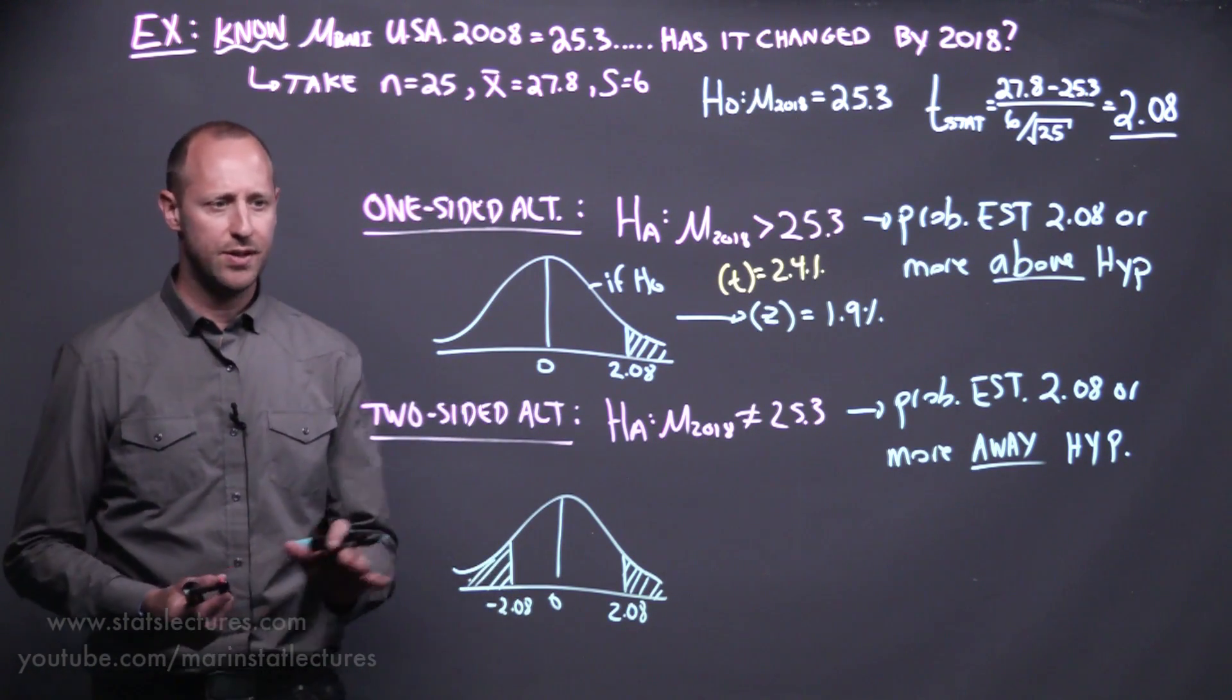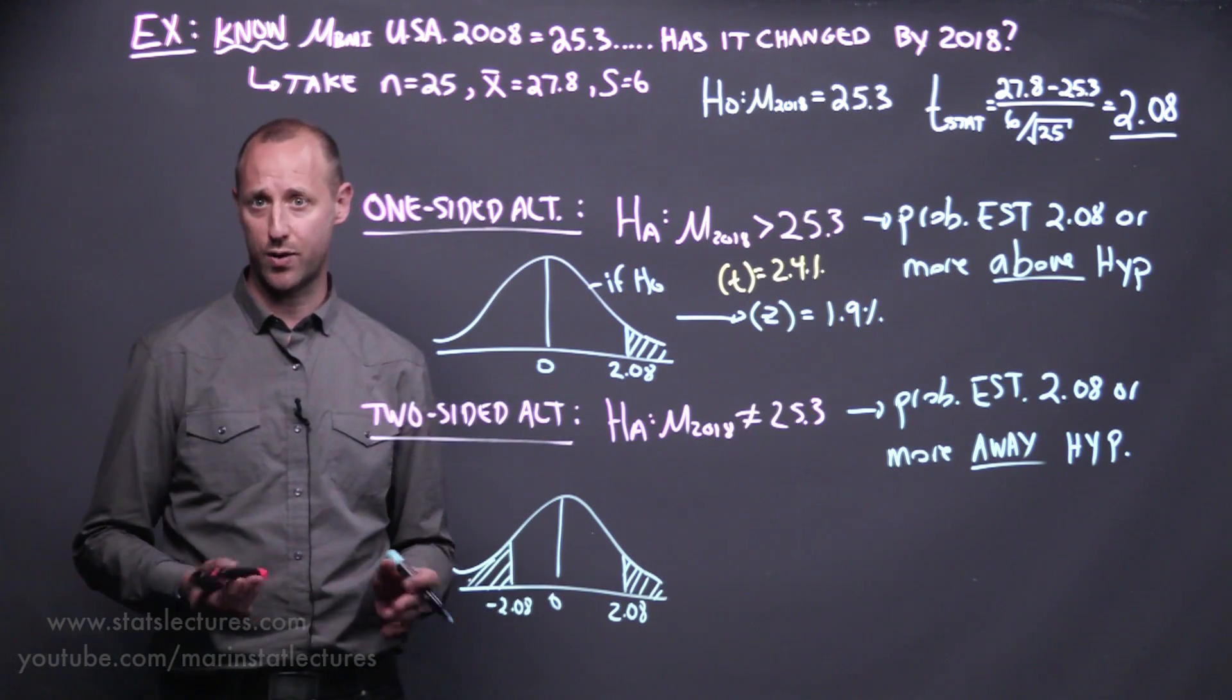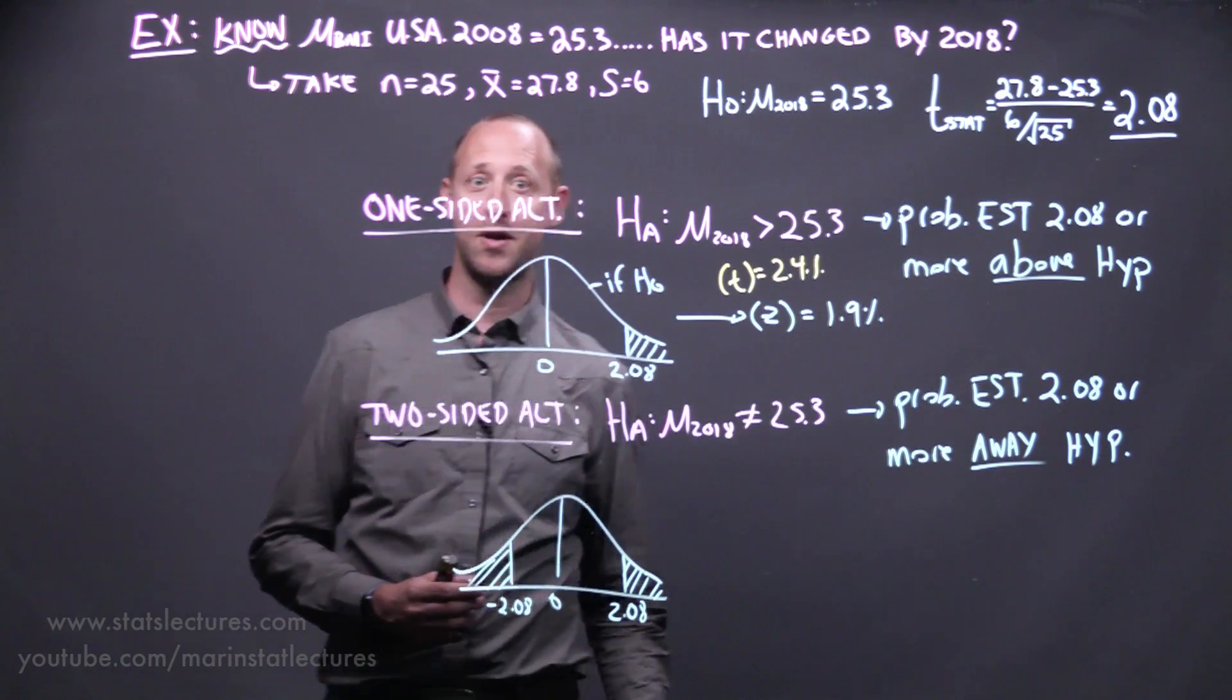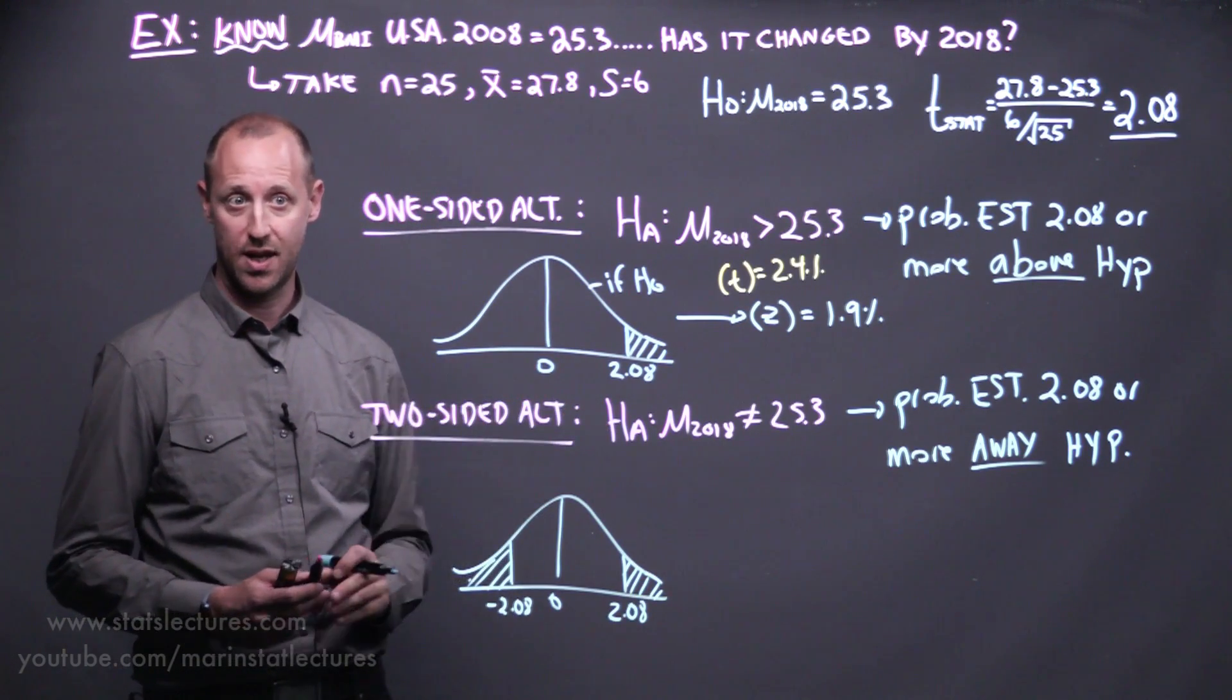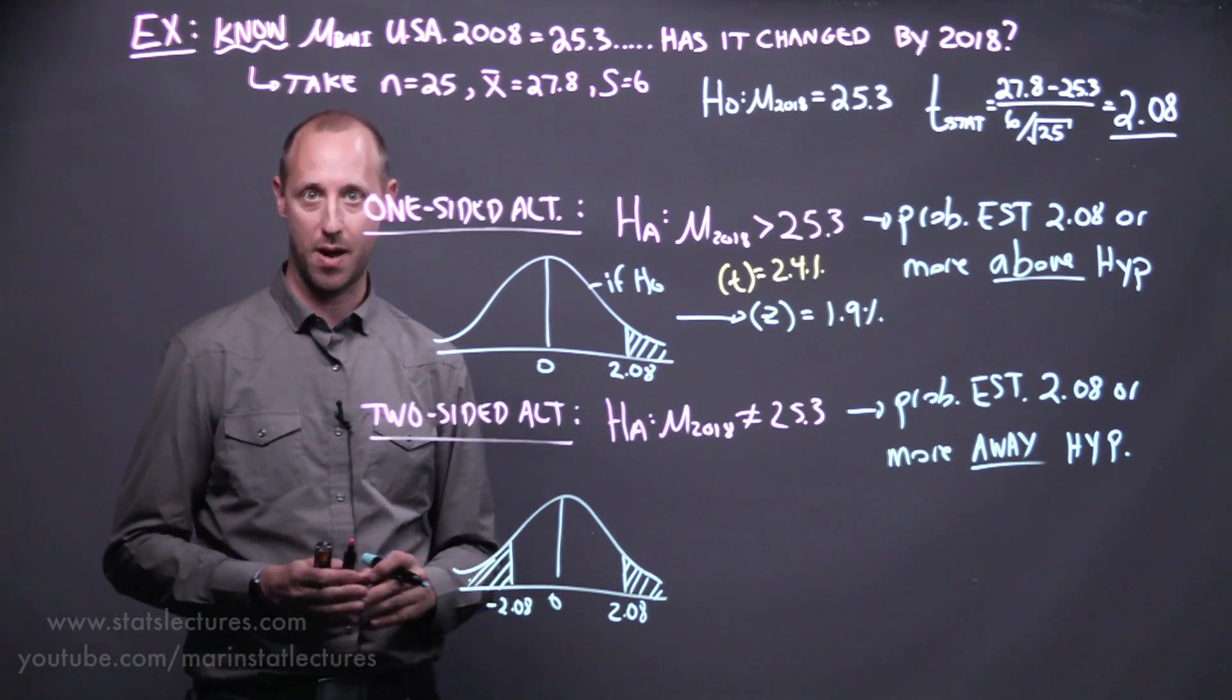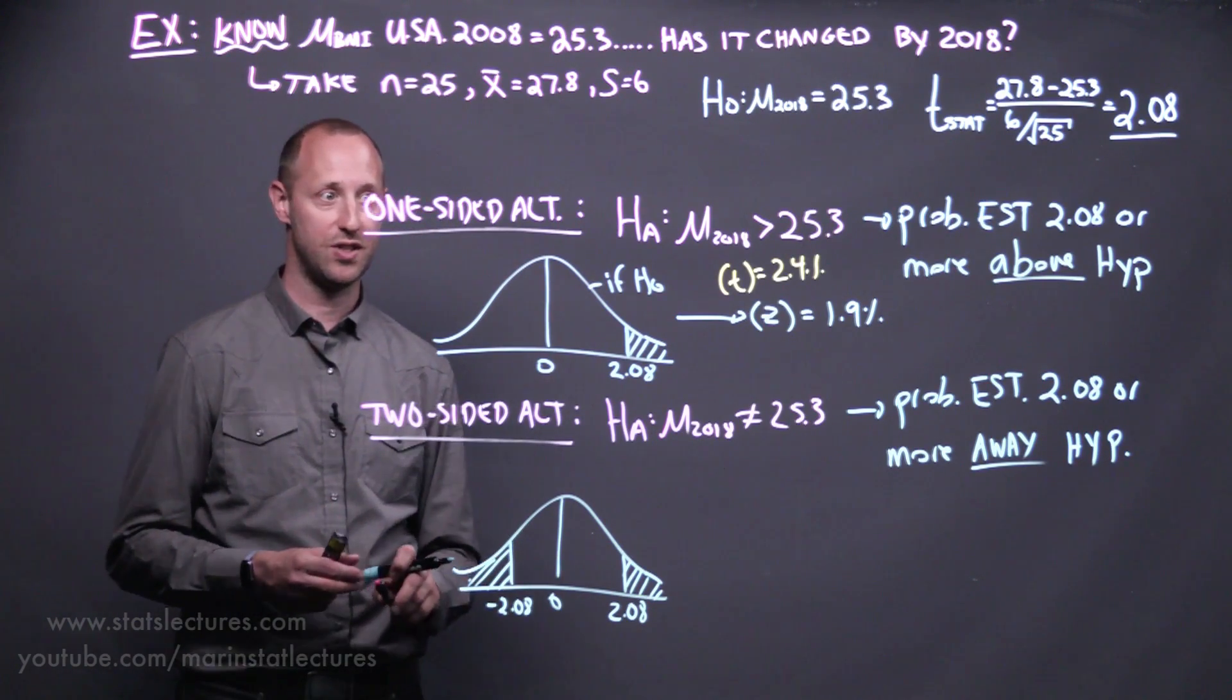Now in some sense, the two-sided test, you can think of or I think of it as asking a bit more of a fairer question, rather than looking at how often we get an estimate that's about two standard errors above what we hypothesized. How often will we see a deviation this large? How often will our estimate move 2.08 or more standard errors away from what we hypothesized? How often will we see an absolute deviation this large?